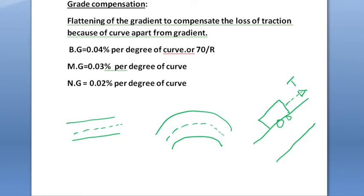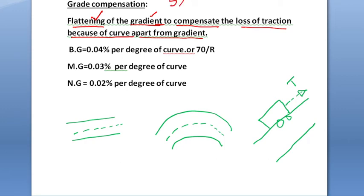Now let us look at the main topic: grade compensation. Grade compensation is the flattening of the gradient to compensate for the loss of traction because of a curve, apart from the gradient. Flattening means lowering the value of gradient — for example, bringing it down from 5% to 4% or 3% based on requirement — because when a curve and gradient are combined, there is a loss of traction.